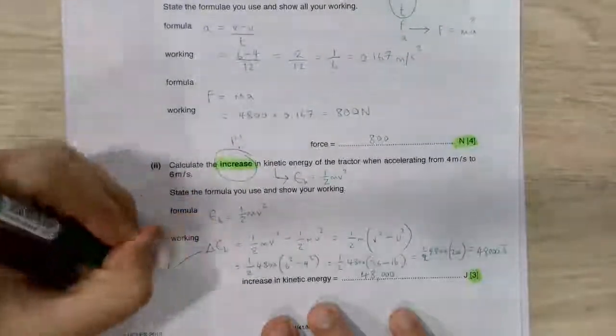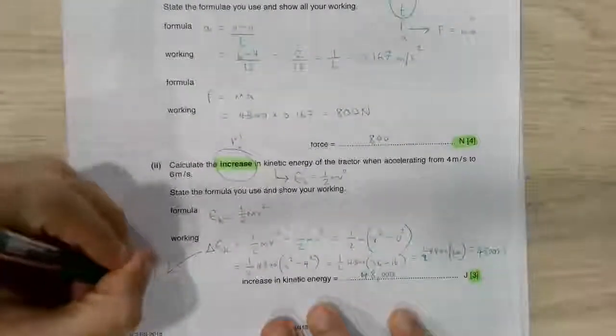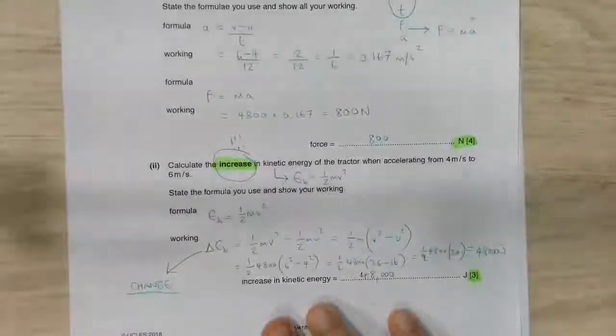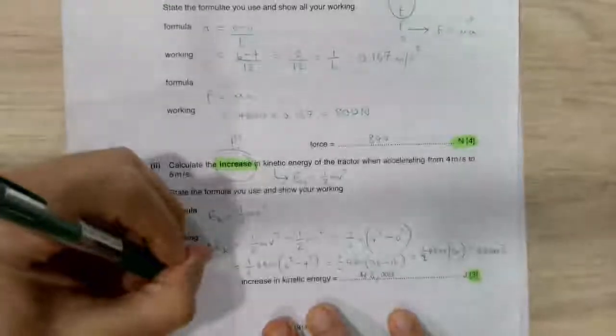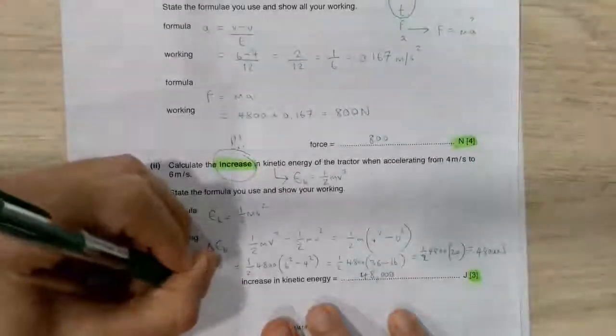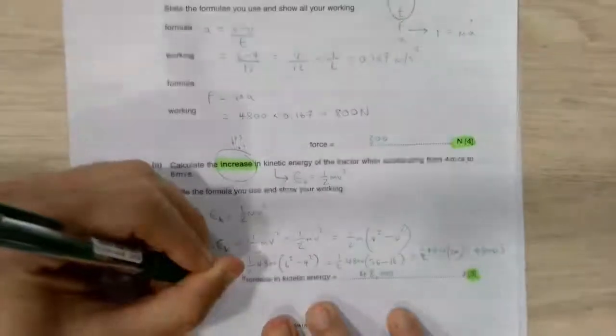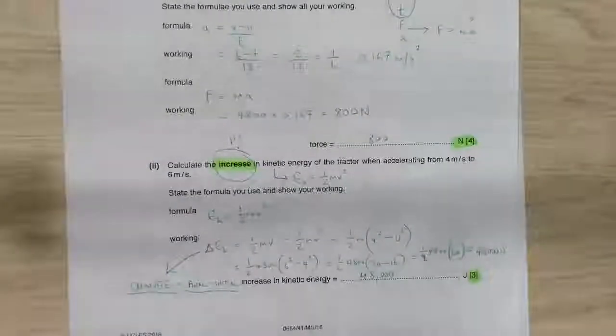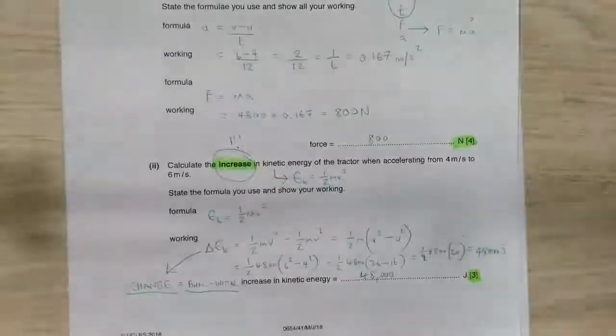So this delta over here, it means change. That's a thing that physicists like to do. Change, in this case, is going to be equal to the final minus the initial. Anytime you want to find the change, change in temperature, change in time, it's the final, take away the initial.